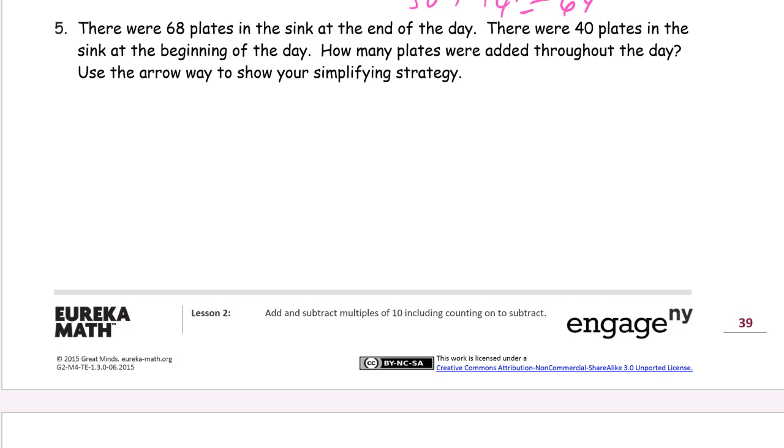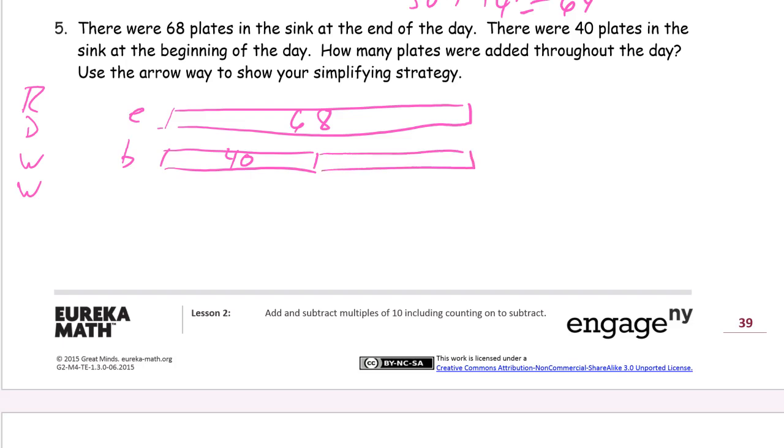There were 68 plates in the sink at the end of the day. There were 40 plates in the sink at the beginning of the day. How many plates were added throughout the day? Use the arrow way to show your simplifying strategy. So I'm going to start this actually with a tape diagram, just to RDW this. So I read it, and I'm going to draw it, 68 plates at the end of the day. So E for end, 68 plates. But in the beginning of the day, there were 40, and we need to know, these are the plates that were added. We don't know how many were added. So whatever we had at the beginning, and then we added more, and it ended up being the same as the 68 for the end of the day.